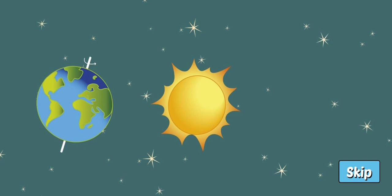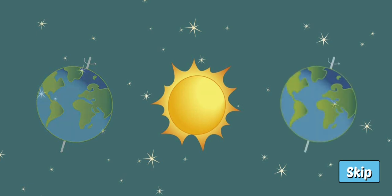As the Earth continues its one-year path around the Sun, the tilt eventually faces the Southern Hemisphere towards the Sun, so they experience summer. And at that time, the Northern Hemisphere experiences winter as it's tilted away from the Sun.